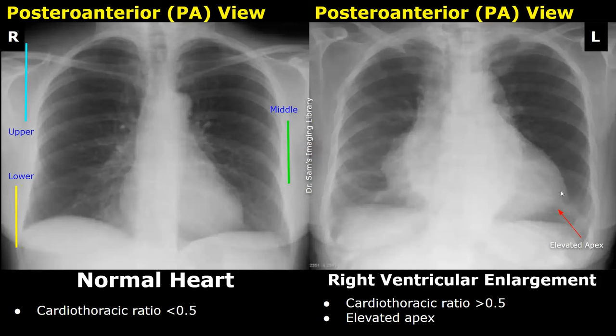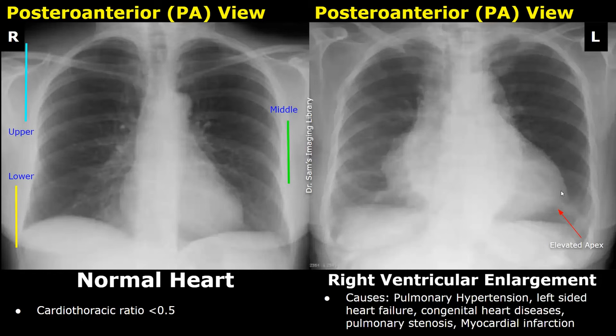Causes of right ventricular enlargement include pulmonary hypertension, left-sided heart failure, congenital heart disease, pulmonary stenosis, and myocardial infarction.